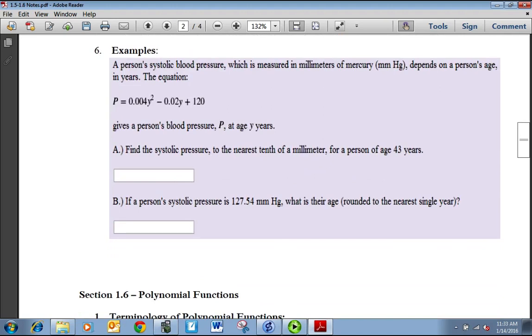A person's systolic blood pressure, which is measured in millimeters of mercury, depends on a person's age. We have an equation, P = 0.004Y² - 0.02Y + 120. Find the systolic pressure to the nearest tenth of a millimeter for a person that's 43. So all we're doing is plugging 43 into the function.